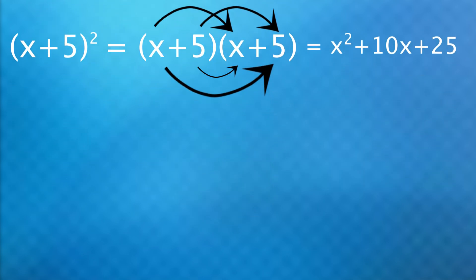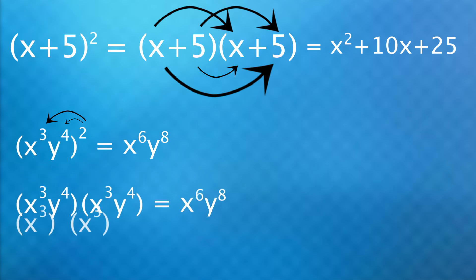If inside the parentheses is just things multiplied and that's all to the second, that's technically when you can multiply the two to all the exponents on the inside. But that only happens because again you technically have to write the same thing twice and when you multiply variables of the same base, you add the exponents which is the same as multiplying by 2 in this case.